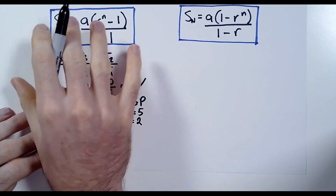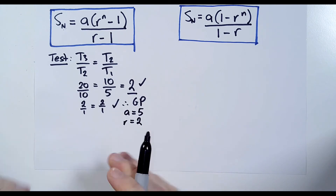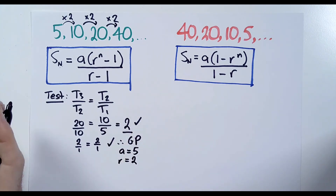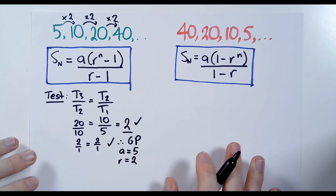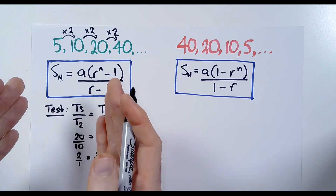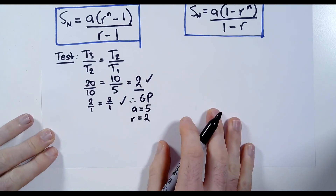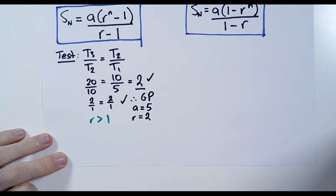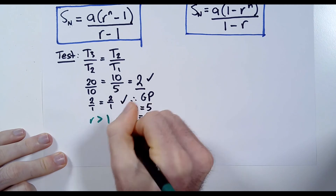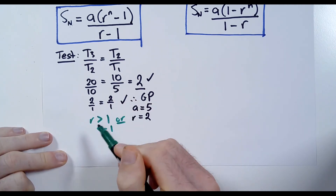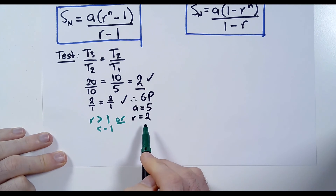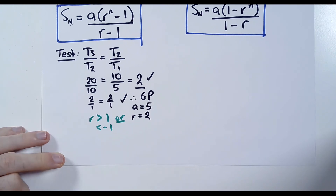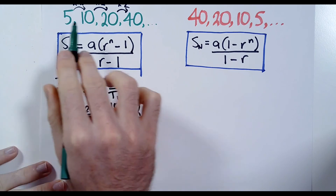Now that we've established it is a GP, the question is which formula do we apply? There are two possible formulas to find the sum of a GP. You use the formula on the left in a situation where the common ratio is either greater than 1 — for instance, 2, 3, 100, 1000 — or less than negative 1, such as negative 2, negative 3, negative 1000. You will use this formula here on the left.